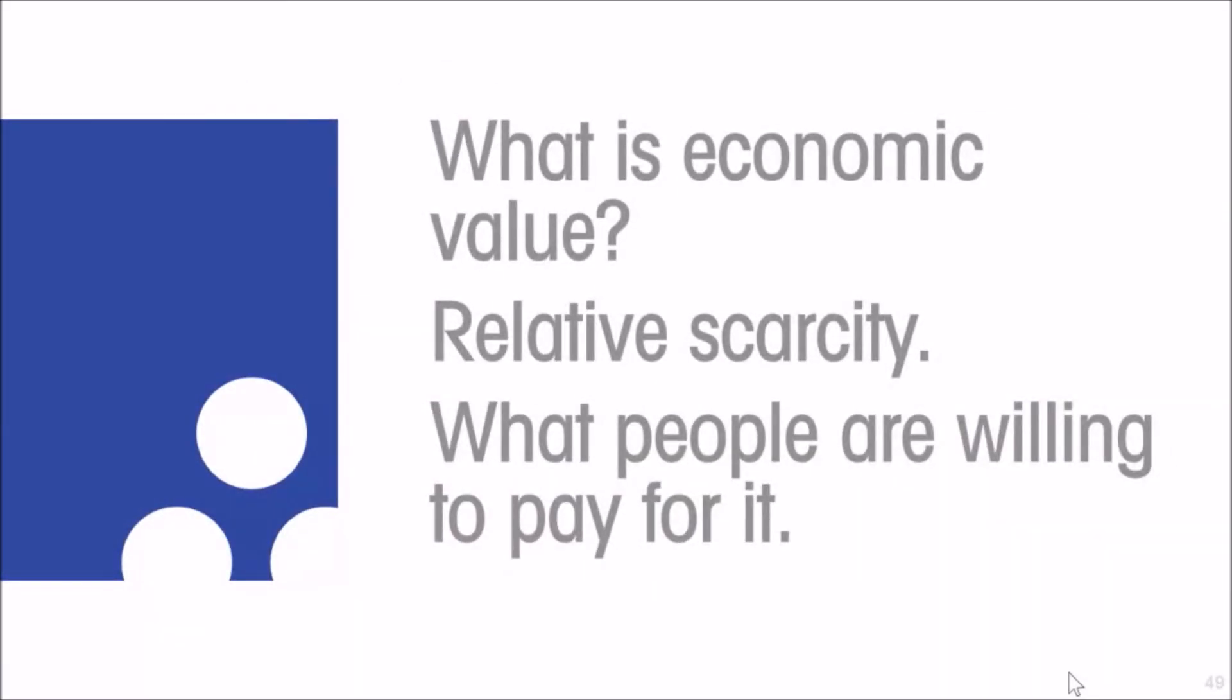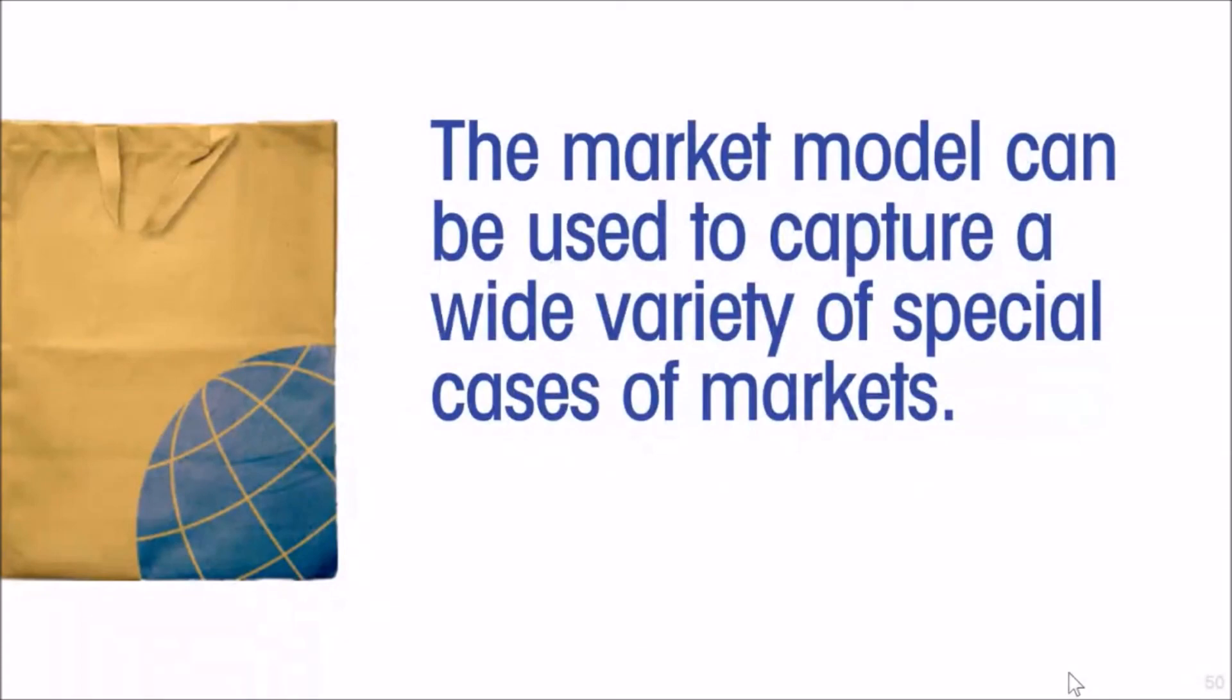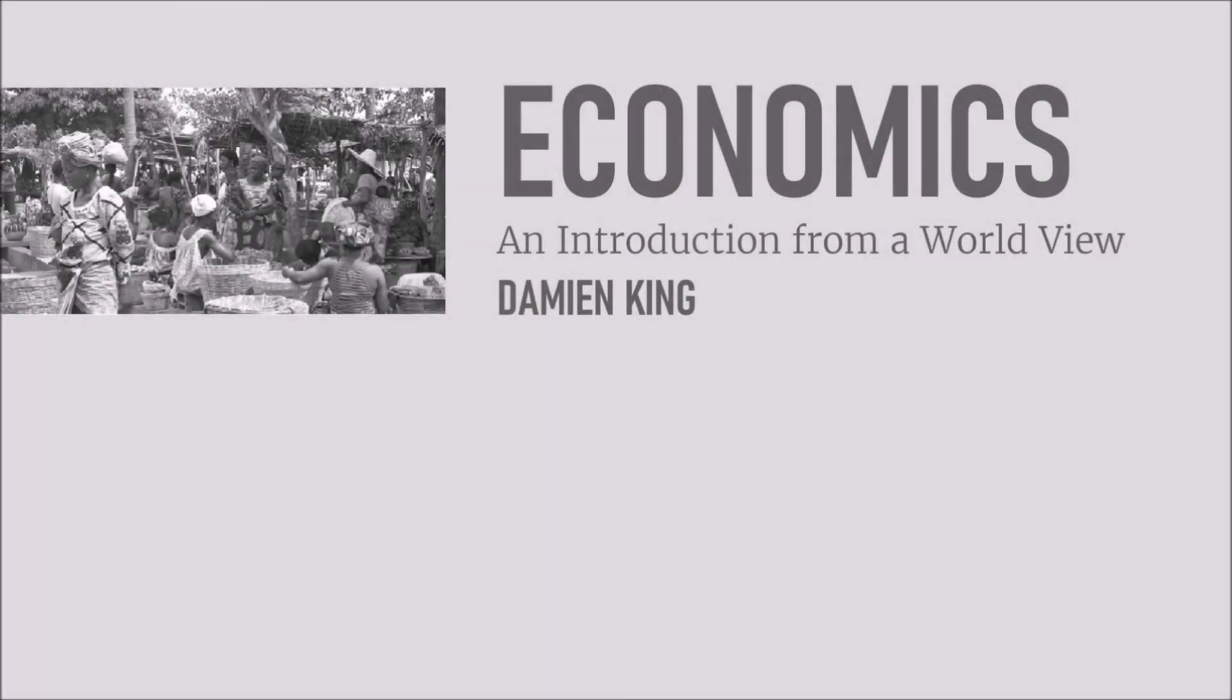So when we talk about what is economic value, economic value depends on relative scarcity. Relative scarcity has both a supply side and a demand side. Relative scarcity is driven by what are people willing to pay for it. In the case of the Mona Lisa, quite a lot. So we see that the market model can be used to capture a wide variety of special cases of markets at work.